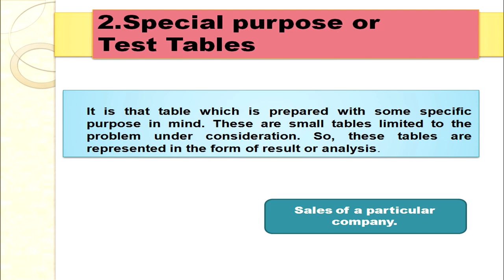Special purpose tables, or test tables, are prepared for some specific purpose. These are small tables limited to the problem under consideration, and are represented in the form of results or analysis. For example, if you want to know about the sales of a particular company, you make a small table covering 12 months from January to December recording the sales. Now we know what a general purpose table and a special purpose table are.